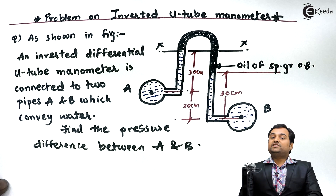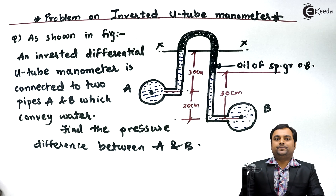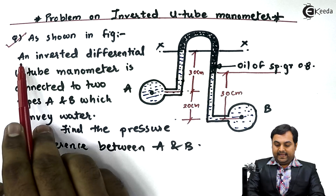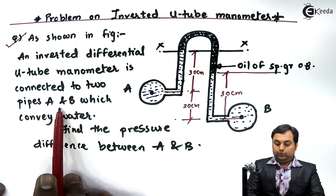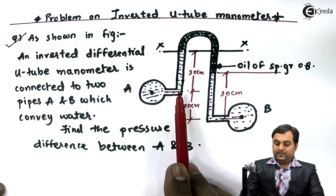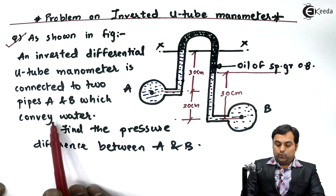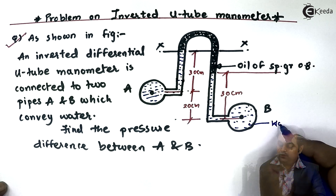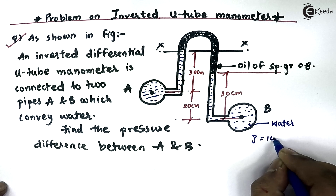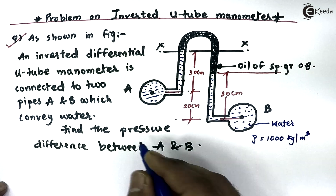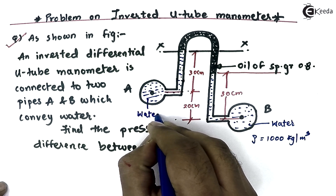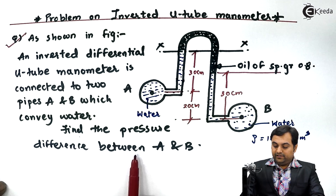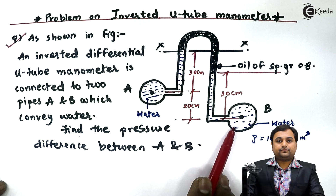Hello friends, in this video we will see a problem on inverted differential U-tube manometer. As shown in the figure, an inverted differential U-tube manometer is connected to two pipes A and B. This is an inverted type manometer which conveys water — meaning both pipelines carry water. We have to find the pressure difference between A and B.